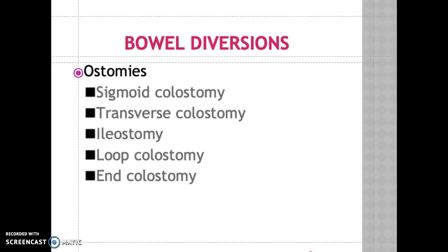To summarize bowel diversion: sigmoid colostomy produces formed stool; transverse colostomy produces soft to liquid stool; loop colostomy is reversible; and end colostomy consists of a stoma bringing the intestine to an opening in the abdomen. A nursing diagnosis associated with bowel diversion could be impaired skin integrity secondary to irritation of the stoma or the skin around the stoma. Keep the stoma clean and dry to prevent irritation.